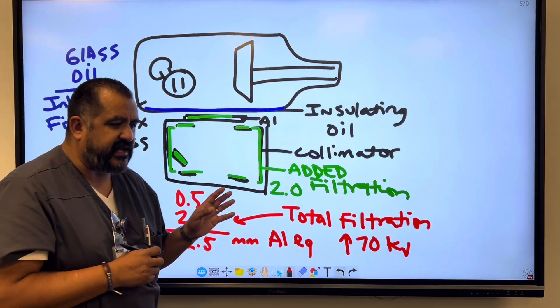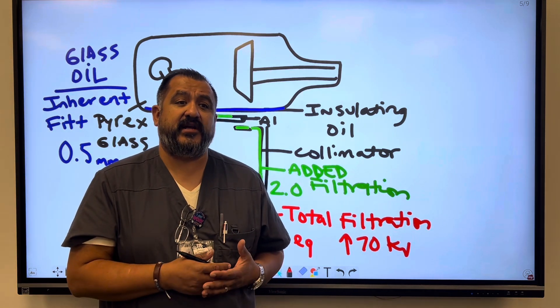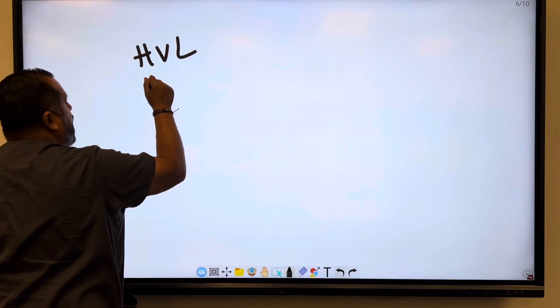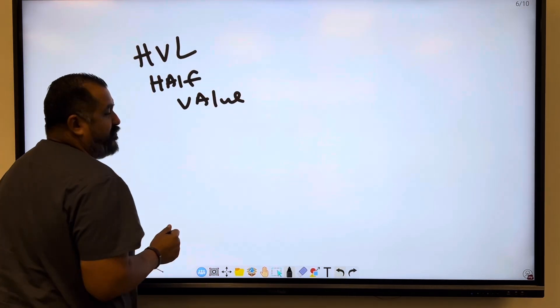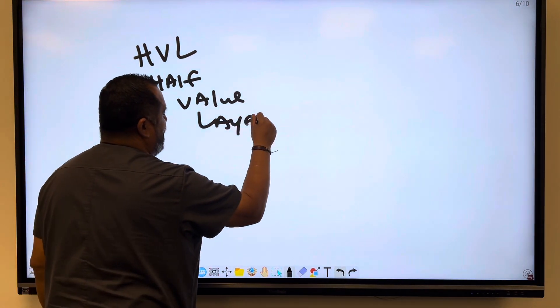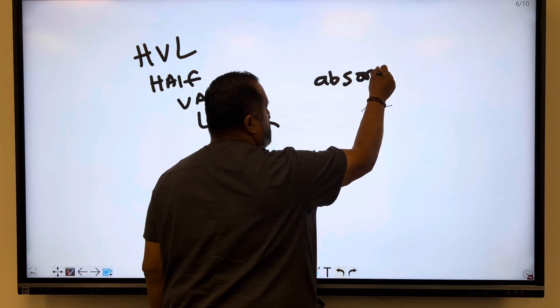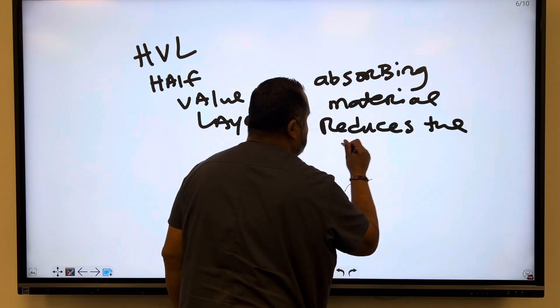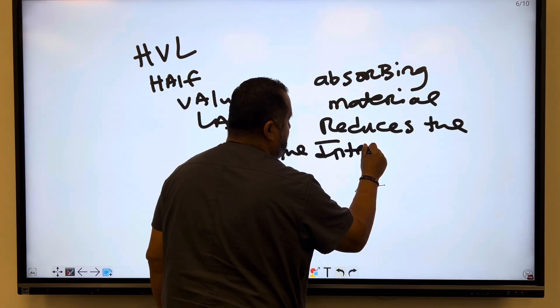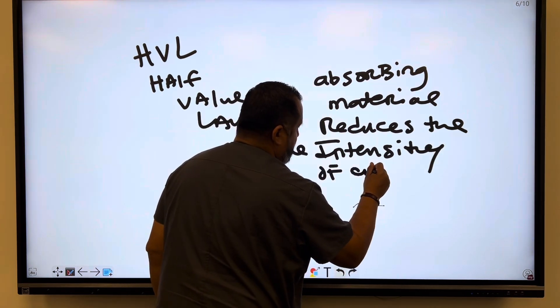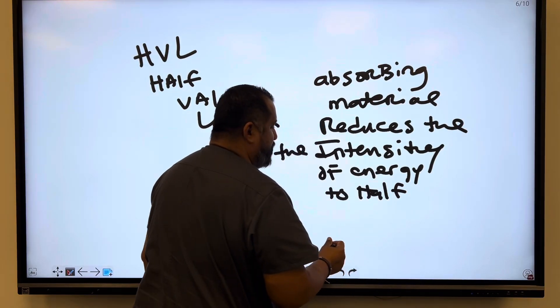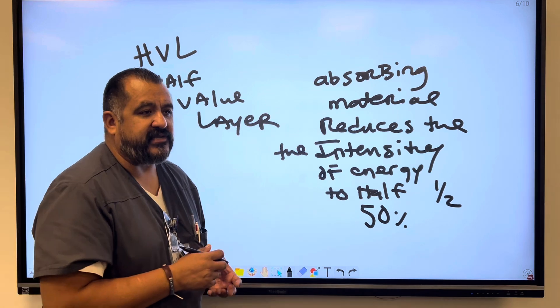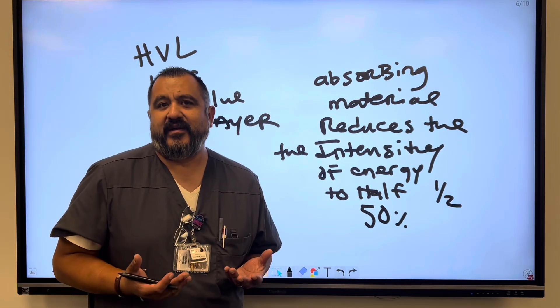Now there's another term that's in the textbook that goes by HVL. So filtration sometimes is related to what's called HVL. So HVL stands for half value layer. So half value layer is any absorbing material that reduces the intensity, the intensity of energy to half the original value. So instead of saying half like this, you can say that it reduces it by 50% of the value. So a half value layer is any absorbing material that reduces the intensity of radiation to half.